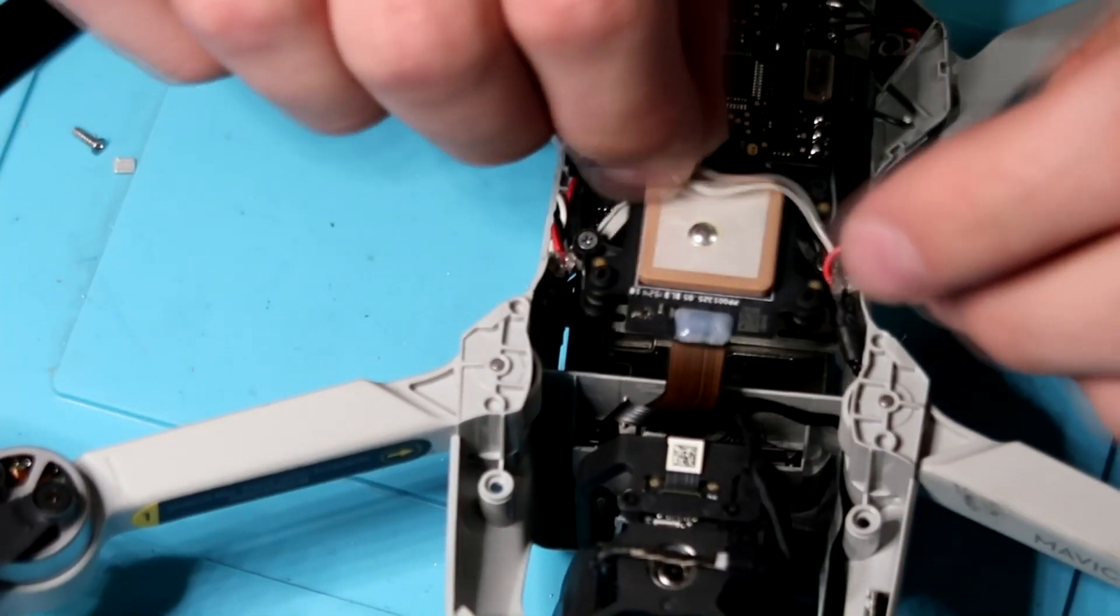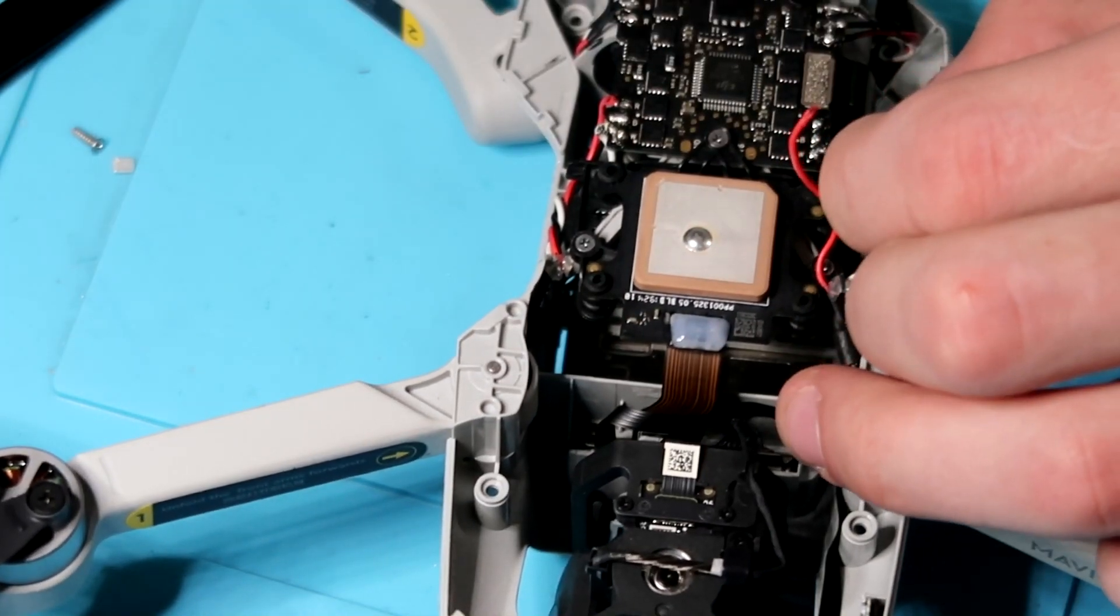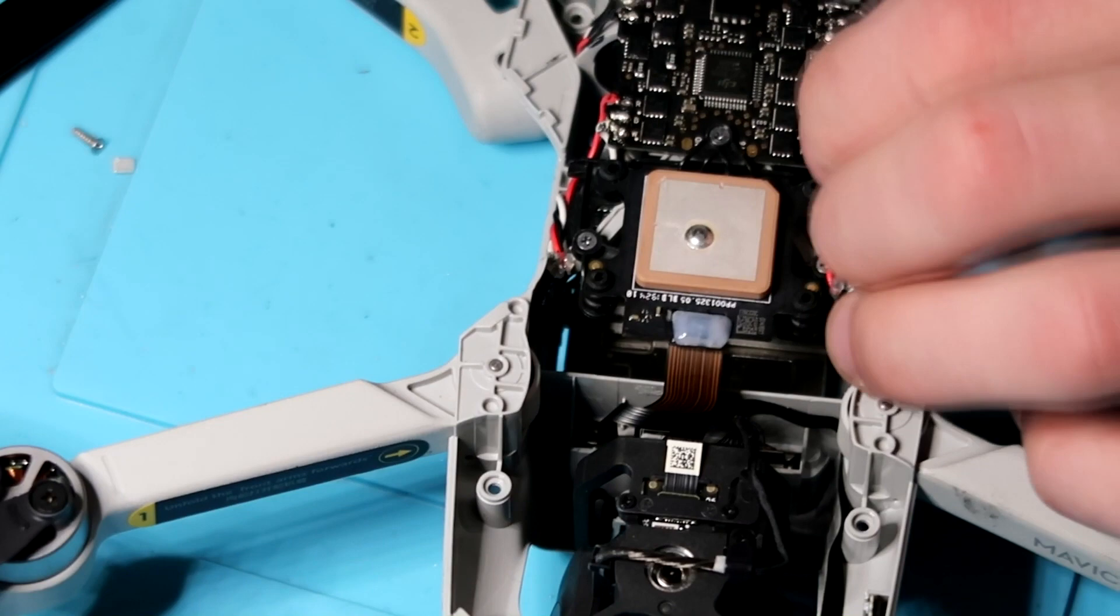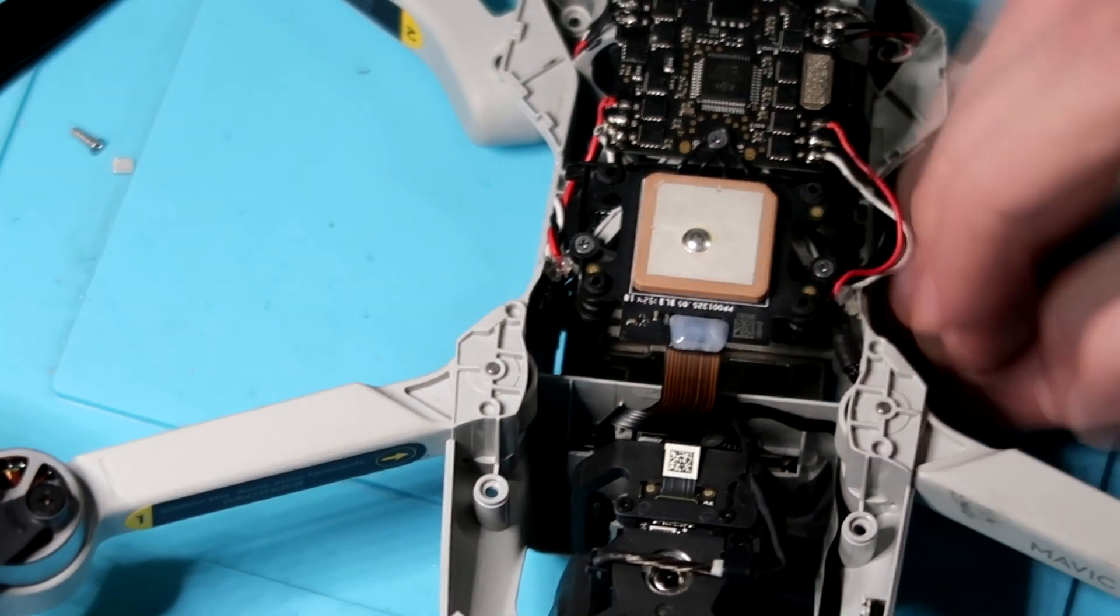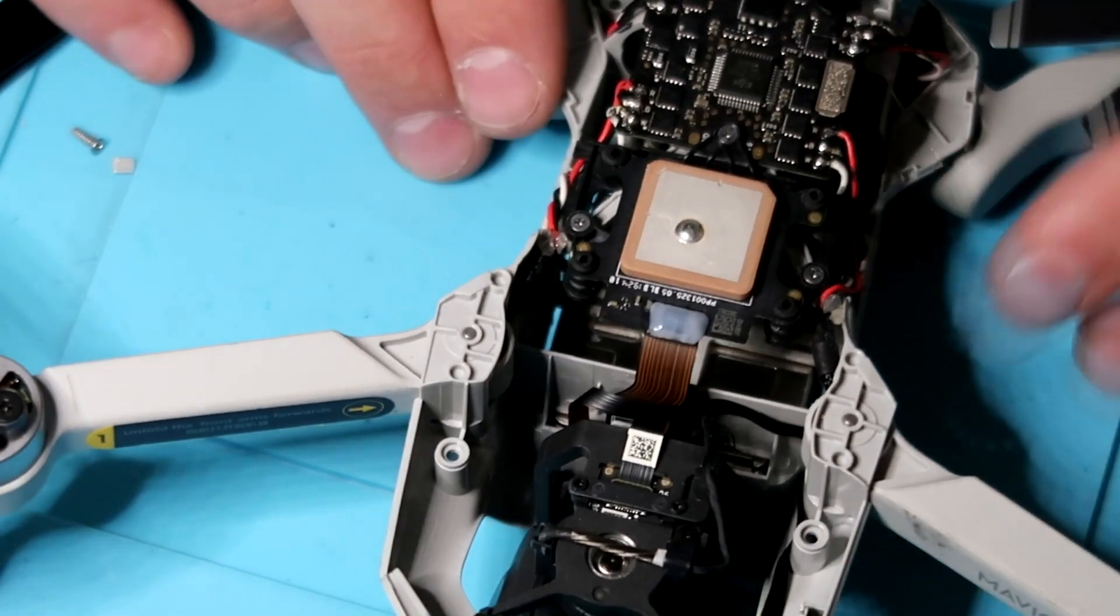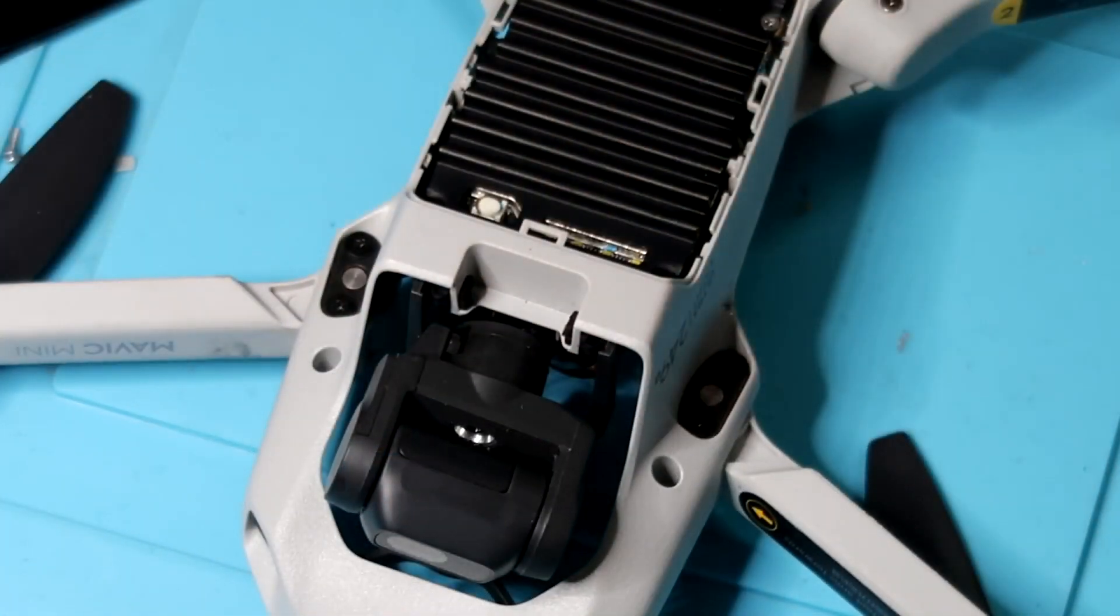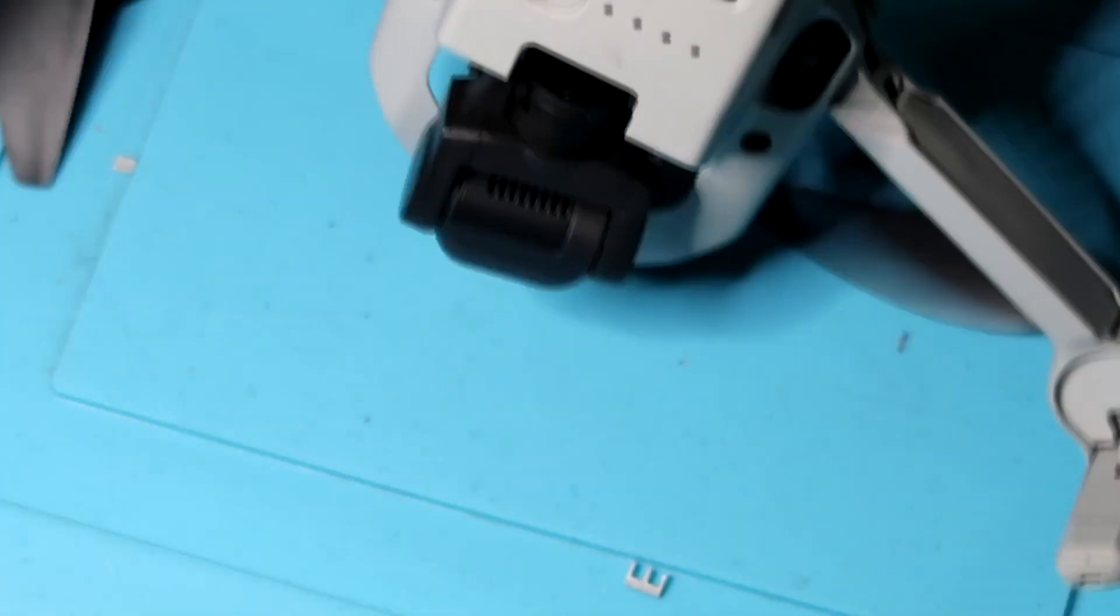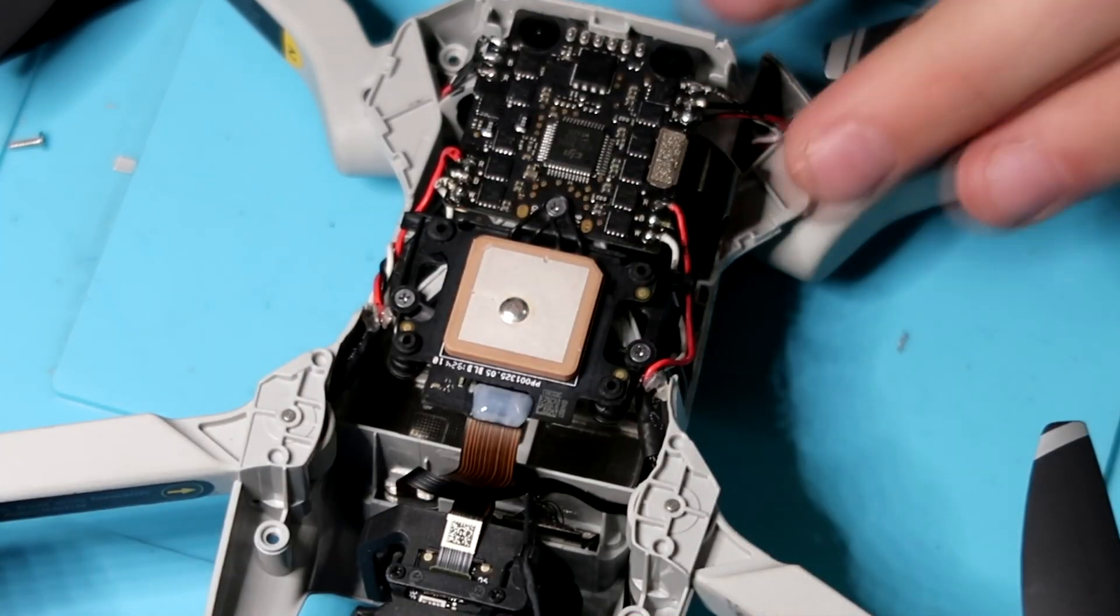Let's solder these motor wires back to the board and we are almost done. We're on the last step. We just gotta put the top shell on, the bottom shell on from here, and we'll be good to go. If these videos are helping you guys with the Mavic Mini, let me know in the comment section down below. Really appreciate all the support on the last video we did. We're wrapping this one up.